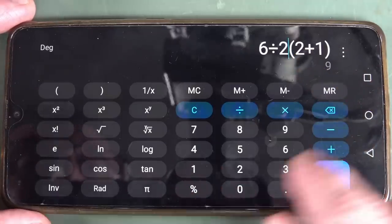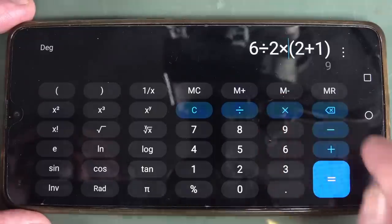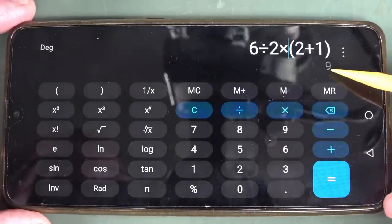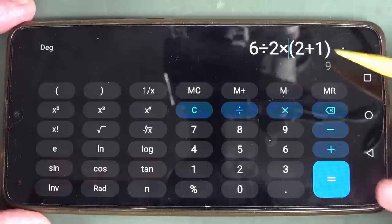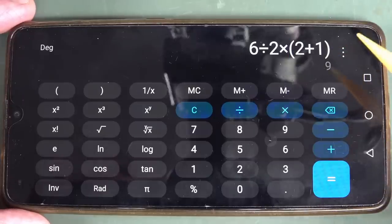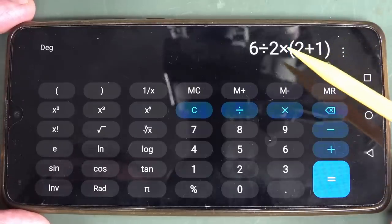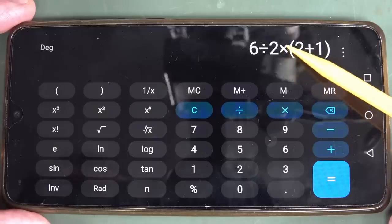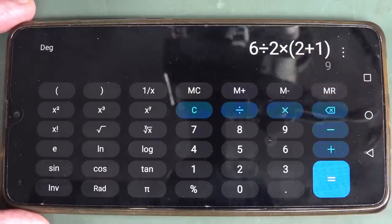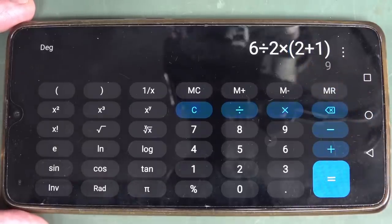So if we actually repeat this, and we put the multiplication in there, it does give us still the result of 9. So this Android calculator makes no distinction between an implied multiplication sign when it's not there, or if you specifically put it in. They're the same priority of operation.